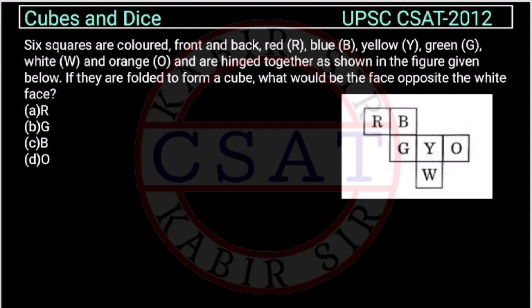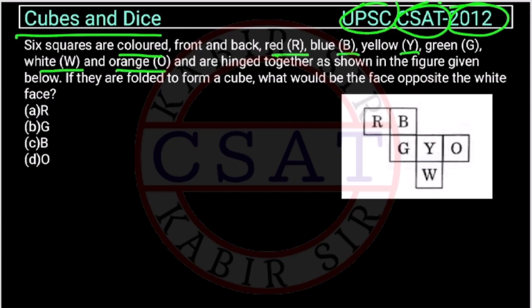Now, this is a question from cubes and dices asked by UPSC in CSAT paper of 2012. Six squares are colored front and back: red, blue, yellow, green, white, and orange, and are hinged together as shown in the figure given below.